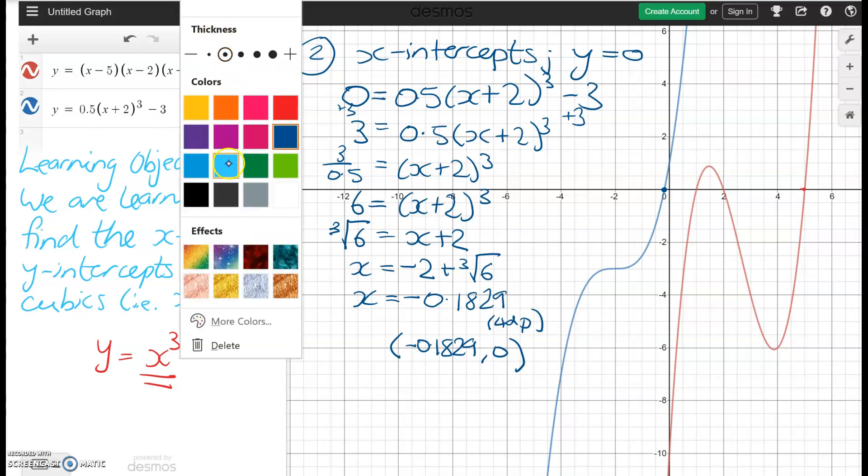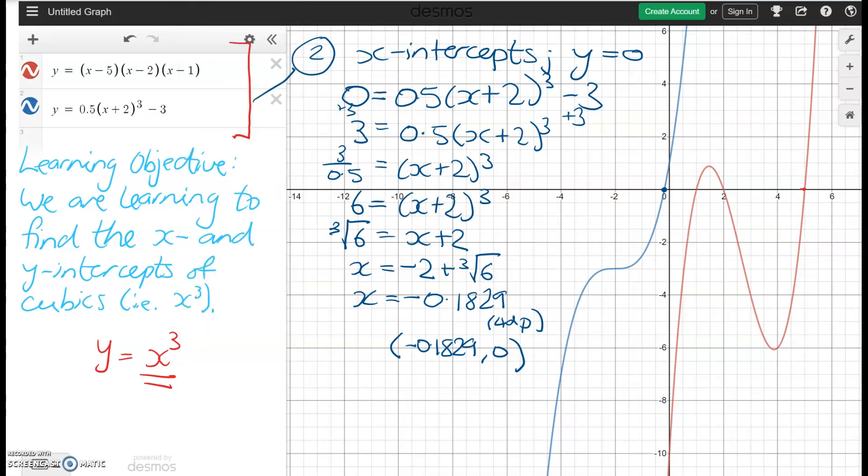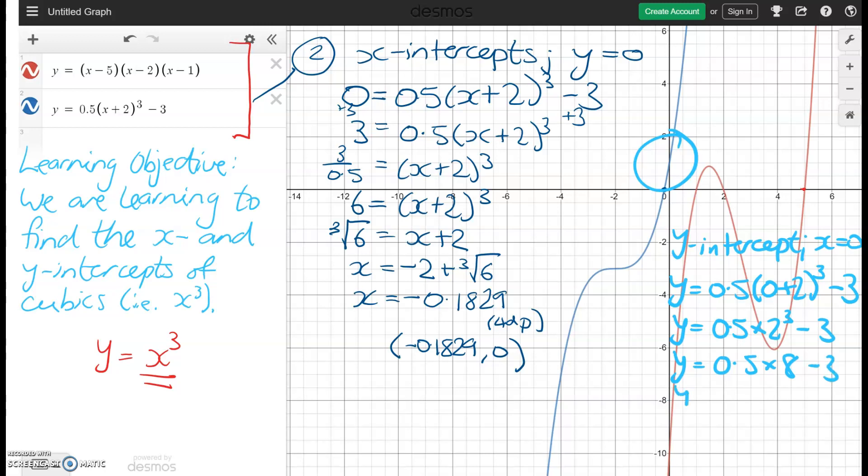Just going to switch pen colors to make it clearer for the next one. Now that we've done that, we're now trying to find the y-intercept, which we think is somewhere down here. So the y-intercept is when x is equal to zero, so 0.5 of zero plus two cubed minus three. That equals one. And that makes sense given our y-value is up here.